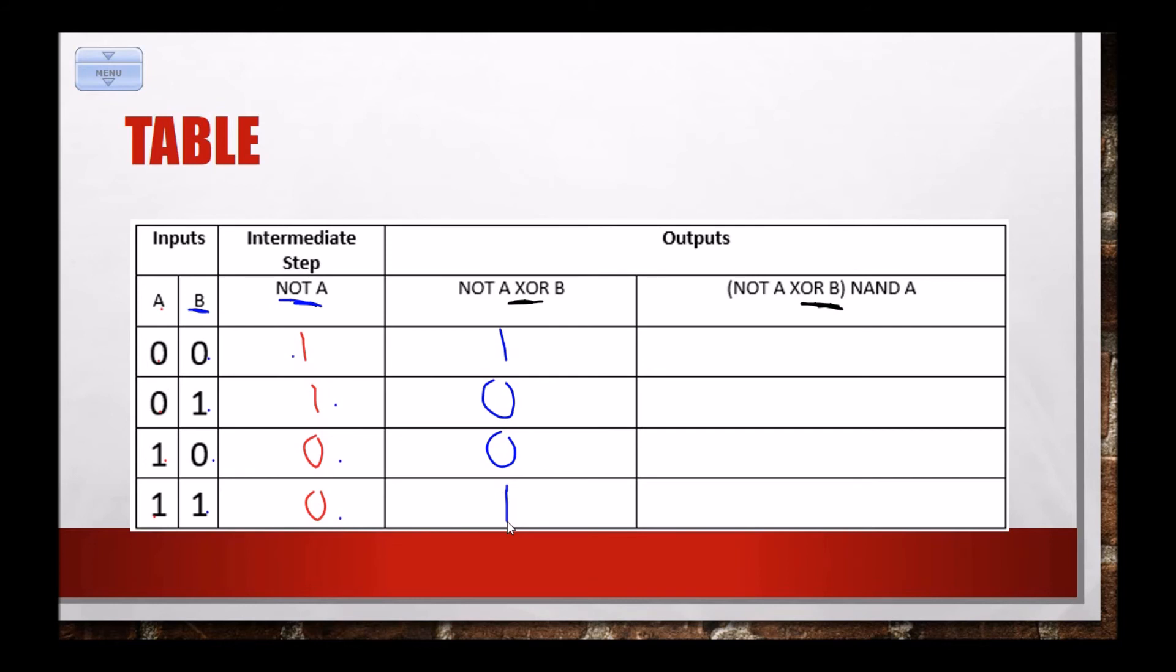Now finally, for my last column, I want to do the NAND operation, right? NAND. So I need to look at my NAND table, which remember was 1, 1, 1, 0, because it's the opposite of AND. Okay, I want to look at NOT A XOR B, so this thing, and A, so that guy. So I want 1 NAND 0, 1 NAND 0 is 1, great. I want to look at 0 NAND 0, 0 NAND 0 is 1, so 1. I want to look at 0 NAND 1, 0 NAND 1 is 1, so 1. Now I want to look at 1 NAND 1, 1 NAND 1 is 0, so 0.